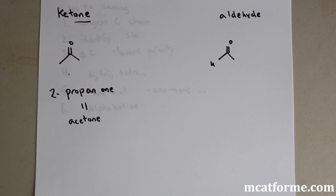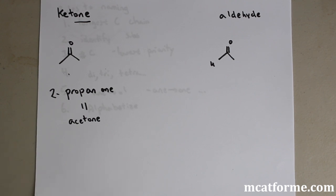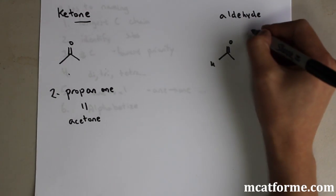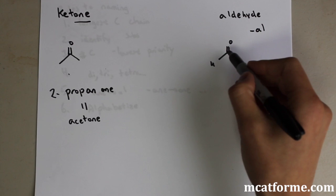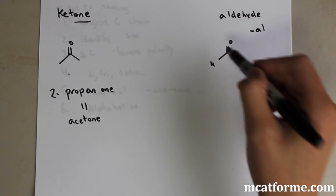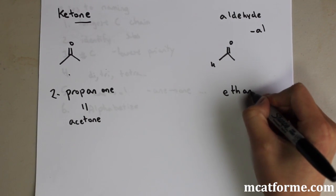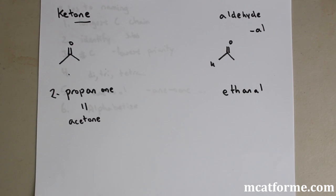Aldehydes have an H instead of one of those CH3 groups, so they are always at the very end — we won't even need to number them because it has to be carbon number one. Aldehydes have the ending '-al'. With two carbons the prefix is 'eth', then '-an-', then '-al': ethanal.